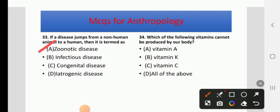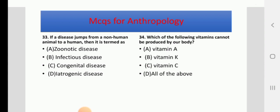Which of the following vitamins cannot be produced by our body? Options: Vitamin A, Vitamin K, Vitamin C, or All of the above. The right answer is Vitamin C — it is the vitamin which cannot be produced by our body.